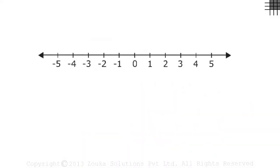This is the number line. We have zero in the middle, positive integers on the right and negative integers on the left.